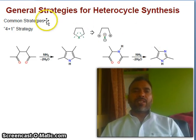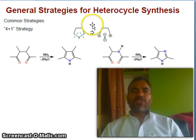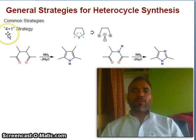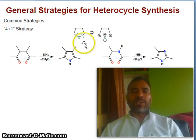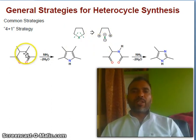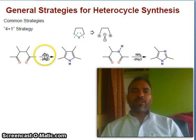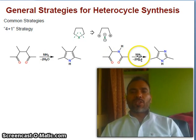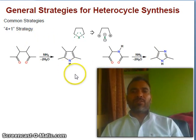Now let us consider the general strategies for heterocyclic synthesis. What is the common strategy? Four-plus-one strategy: four will come from one molecule and one will come from another molecule. You can see here this five-membered ring contains one, two, three, four carbons and this heteroatom. In such a situation — one, two, three, four carbons and this nitrogen — four plus one will give you pyrrole, substituted pyrrole. If you have such a reactant with introduction of NH3 at these positions, then you get imidazole. So this is the strategy for four-plus-one.